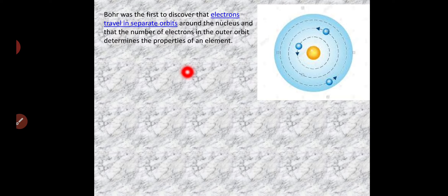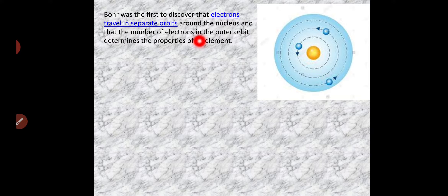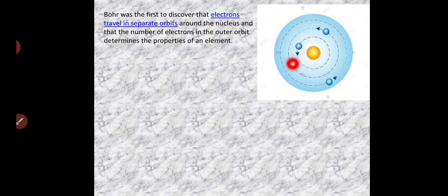Bohr was the first to discover that electrons travel in separate orbits around the nucleus. What Neil Bohr said is that electrons travel in their own separate orbits, and the number of electrons in the outer orbit determines the properties of the element.